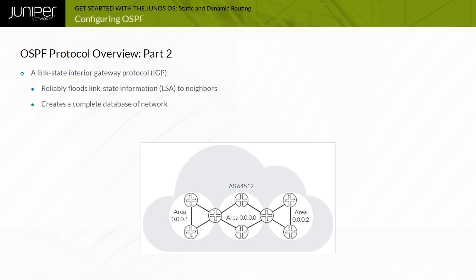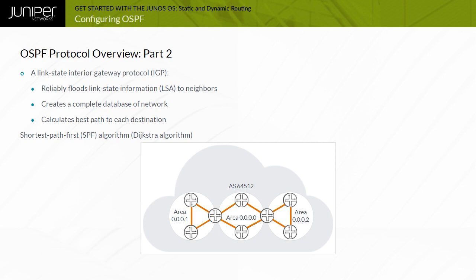The link state topological database stores LSAs as a series of records. The important information for the shortest path determination process includes the Advertising Router's ID, its attached networks and neighboring routers, and the cost associated with those networks or neighbors. OSPF uses the Shortest Path First, or SPF algorithm — also called the Dijkstra algorithm — to calculate shortest paths to all destinations incrementally.